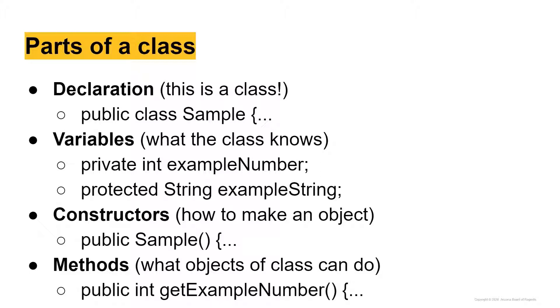Next, we have our class variables. So a good way to think of this is these are the things that the class knows. So for example, we could make variables just like in any other class, like in our main method.